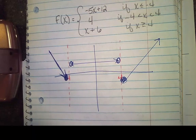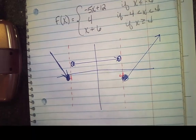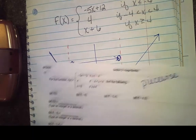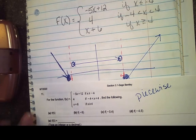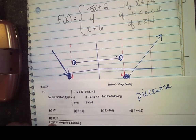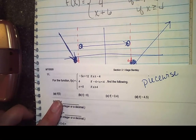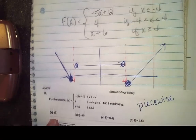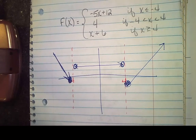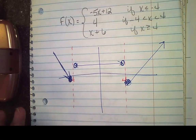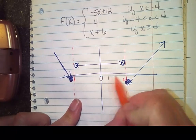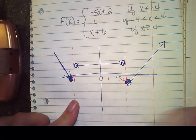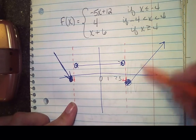We got interrupted but now we're going to finish this one. We have drawn this picture and now we're asked to evaluate. For the first one it says tell me what f of 5 is. The question is who owns the five. Remember that this is just a number line — this was negative 4, this is 0, 1, 2, 3.